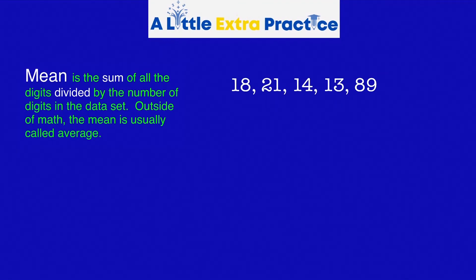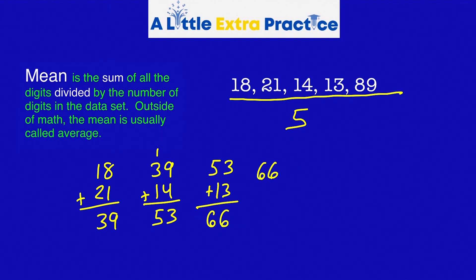Let's look at another example. The first step is to add the digits. Second step, divide by how many digits there are. In this case, there's five digits. So I'm going to find the sum and then divide by five. The sum of the digits is 155. Divide by five.